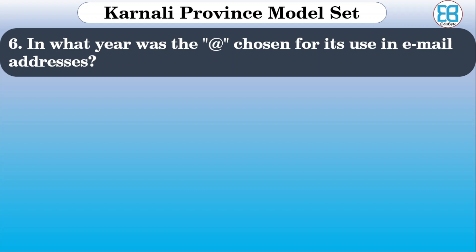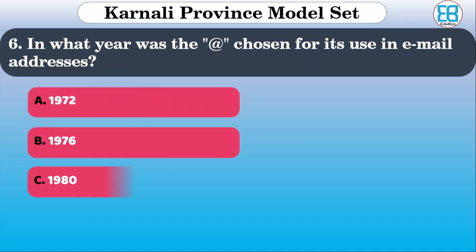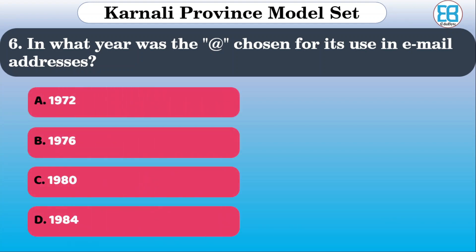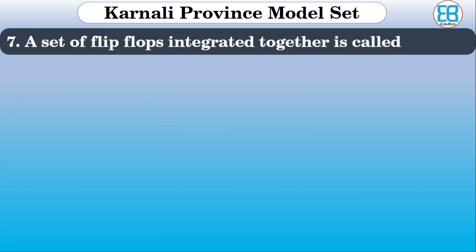In which year was the @ symbol chosen for its use in email addresses? The options are 1972, 1976, 1980, and 1984. The correct option is 1972.